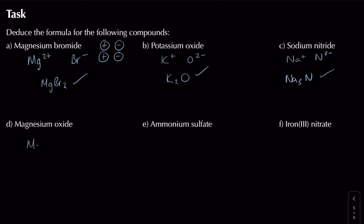Magnesium oxide: Mg2+ and O2 minus. If you just drop and swap, you get Mg2O2, which is wrong. This is where simplification comes in - you find the lowest common multiple and divide by two, giving simply MgO. That's the correct formula.